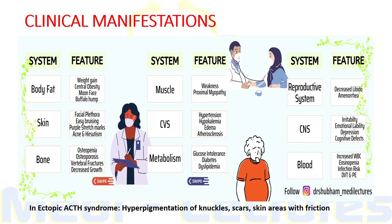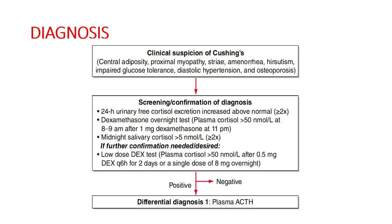An important point: in ectopic ACTH syndrome due to paraneoplastic syndrome, there is characteristic hyperpigmentation of knuckles, scars, and skin areas at high risk of friction. When there is clinical suspicion of Cushing syndrome — due to central adiposity, proximal myopathy, striae, amenorrhea in females, hirsutism, impaired glucose tolerance, diastolic hypertension, or osteoporosis — we first make the diagnosis of Cushing syndrome irrespective of its cause.